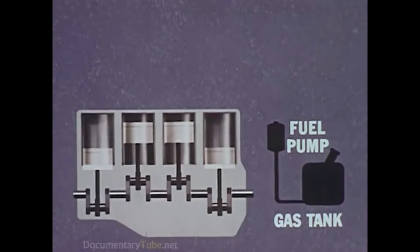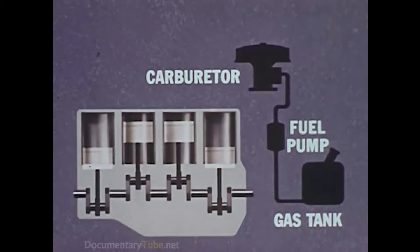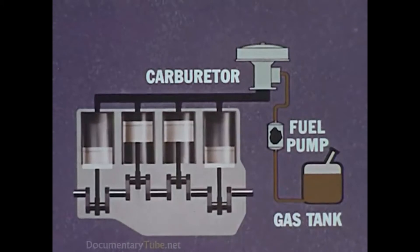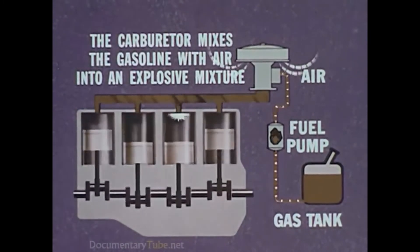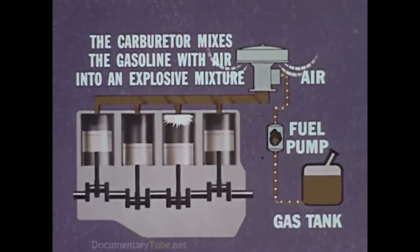Gasoline from the tank is pumped by the fuel pump to the engine's carburetor through the fuel lines. The carburetor mixes the gasoline with air to form the explosive mixture that drives the pistons.